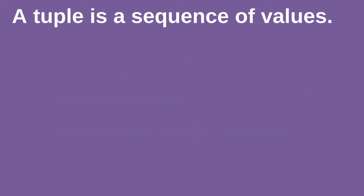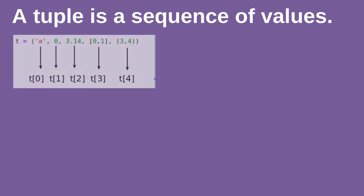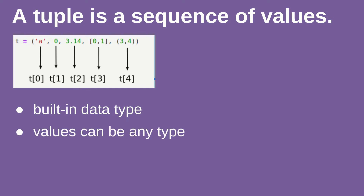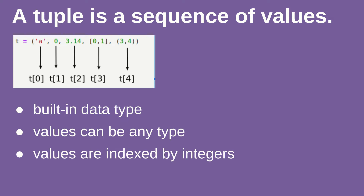So what are tuples? They are sequences of values. The picture really well illustrates the tuple and how it's organized. You can see that this is a built-in data type in Python. Values can be from any type. We have a nested tuple inside a tuple, and also the values are indexed by integers starting from zero. Tuples are immutable, which is really important.